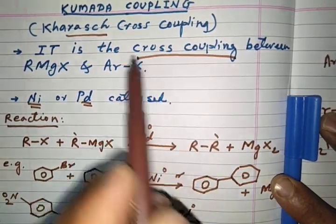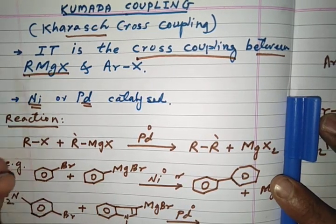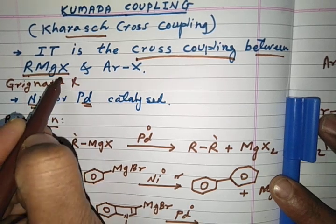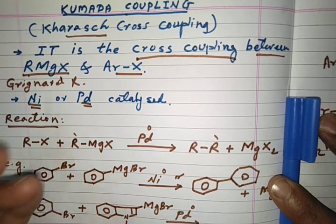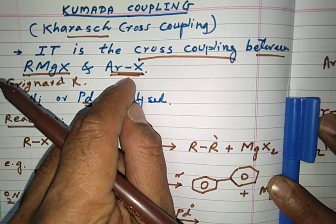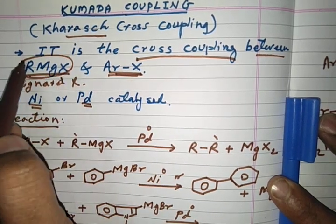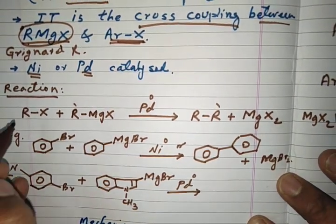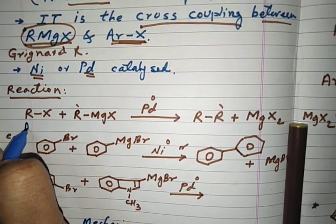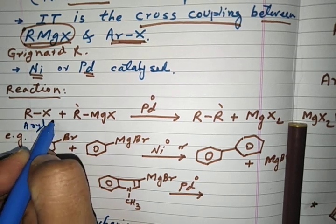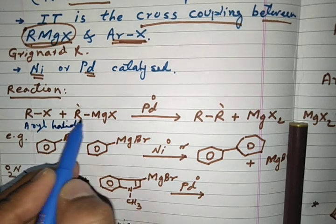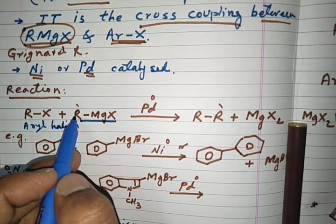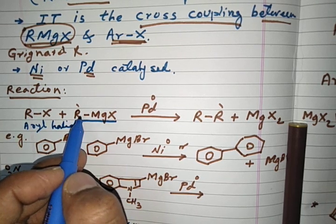This is a cross coupling reaction taking place between the Grignard reagent and the aryl halide. The aryl halide is a very common reactant in many cross coupling reactions like Suzuki and Negishi. The Grignard reagent is the particular reactant used for Kumada cross coupling. In this reaction, R in the Grignard reagent should be either an aryl group, or the MgX should be connected to an sp2 carbon — that is, a double bond carbon.